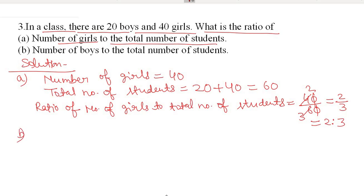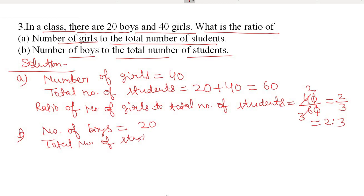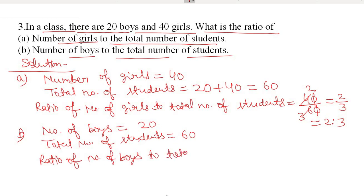The second part: ratio of number of boys to total number of students. Number of boys is 20 and total number of students is 20 plus 40, that is 60. So the ratio of number of boys to total number of students is 20 upon 60.